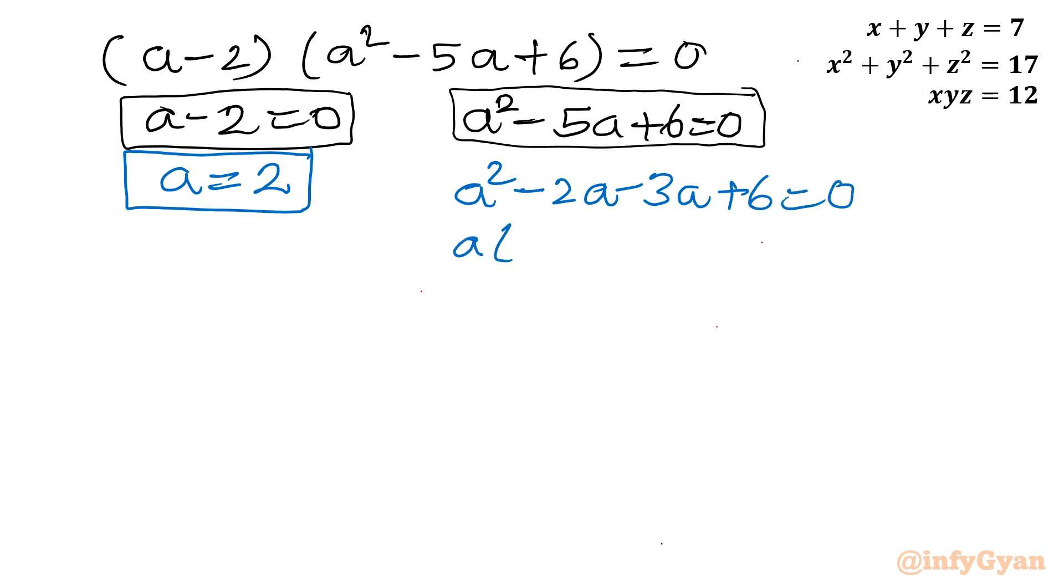Take a common a minus 2. Take minus 3 common a minus 2 equal to 0. A minus 2 times a minus 3.